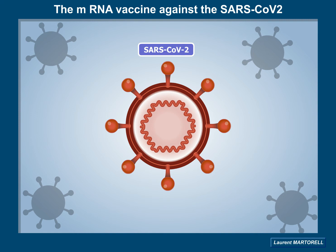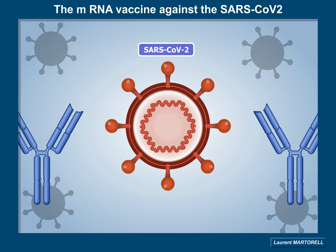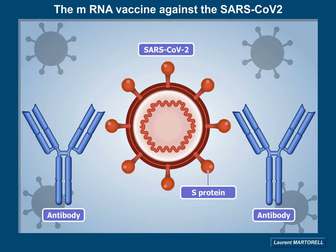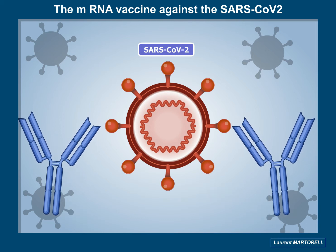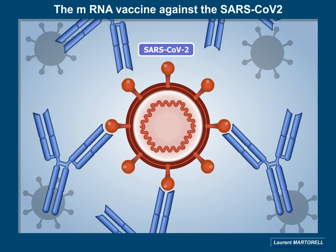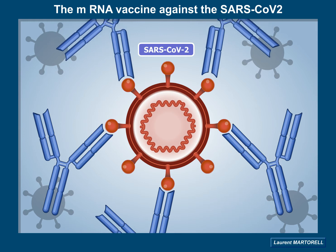The COVID-19 vaccine aims at producing antibodies by the patient's immune system. These antibodies target the S-viral protein of the coronavirus. The binding of these neutralizing antibodies to the S-protein prevents the infection of the cell and thus aborts the viral cycle in its first step.